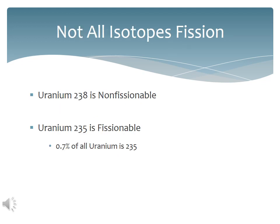The vast majority of the uranium on Earth is non-fissionable uranium-238. Only 0.7% of the naturally occurring uranium on Earth is the fissionable uranium-235. This is one of the things that makes making an atomic bomb difficult.